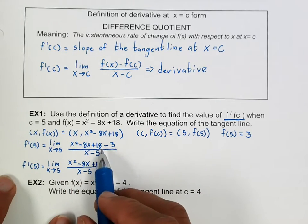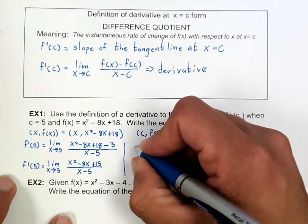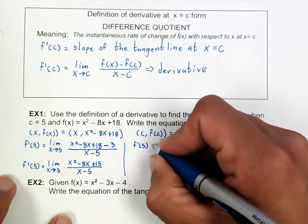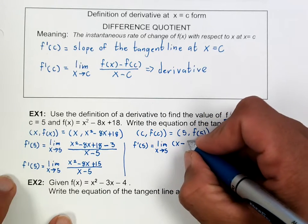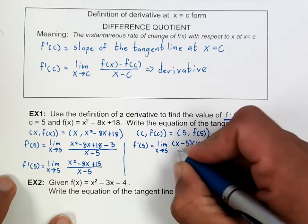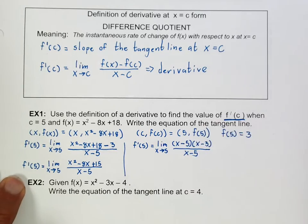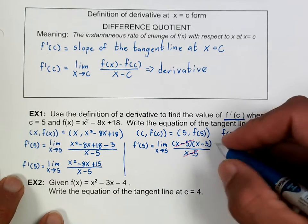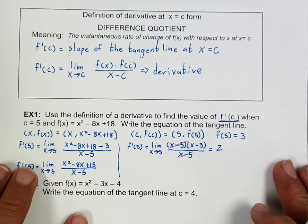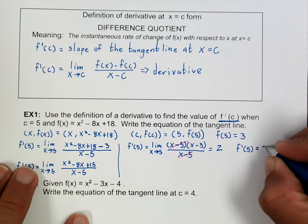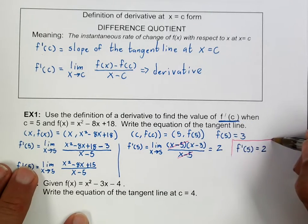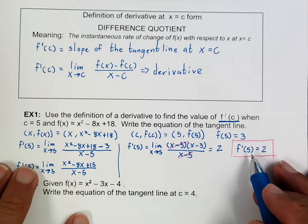Factoring gives the limit as x approaches 5 of (x-5)(x-3) over (x-5). Notice that (x-5) cancels, and once I cancel that I'm free to plug in the limit. Plugging in 5 gives 5-3 equals 2. So f prime of 5 equals 2, meaning the slope of the tangent line at x equal to 5 is 2.